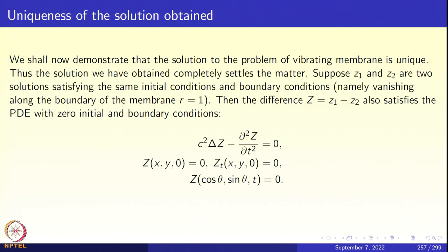Suppose z₁ and z₂ are two solutions of the same differential equation with the same initial conditions and boundary conditions. Take the difference z₁ − z₂, call it Z. Then Z satisfies the same wave equation. Because we took z₁ − z₂, the initial conditions drop out and Z has zero initial conditions. The boundary conditions are zero for both z₁ and z₂, so the boundary condition for Z is also zero. We will show the only possibility is Z = 0.